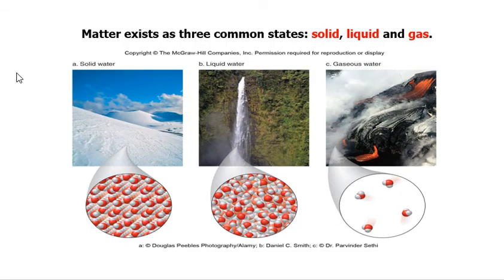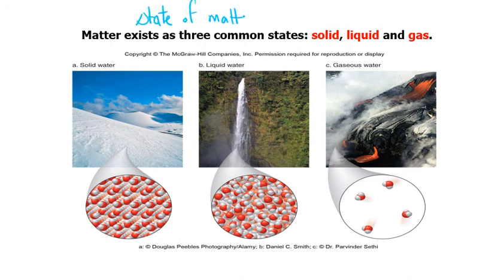Before working on the classification of matter, I may share that matter is composed of three different states — three different phases. In chemistry we have only these three phases or states of matter: solid, liquid, and gas. I'll abbreviate solid as lowercase s, liquid as lowercase l, and gases as lowercase g. So we have three states of matter: S, L, G — solid, liquid, gases.